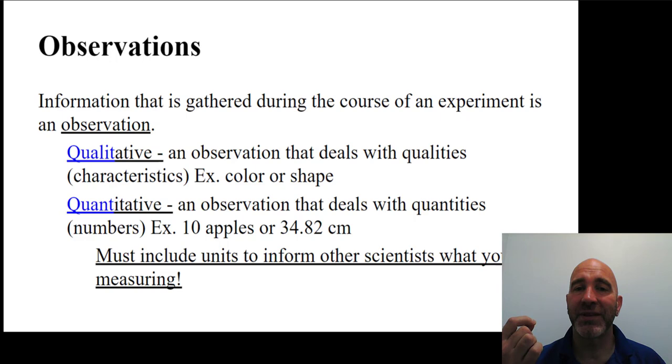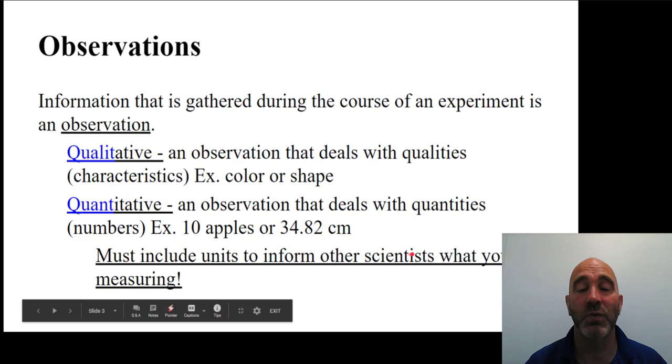Now, quantitative observations have one specific characteristic that make them useful. And that is this word that follows the number. We call this word the unit. You must include a unit so that you inform other scientists what it is that you are measuring.